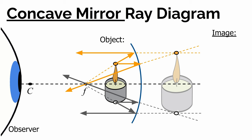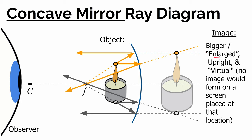The image is bigger — enlarged — and upright, not inverted. Is this a real image? Could we put a screen here and see an image? No, because light never actually gets there. This image only appears in the observer's mind — it appears to be behind the mirror, but if we placed a screen there, nothing would show up because no light from the candle flame or its reflection ever reaches that point. So we call this a virtual image: no image would form on a screen placed at that location; it only exists in the observer's mind.